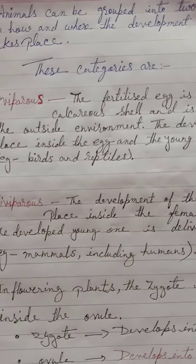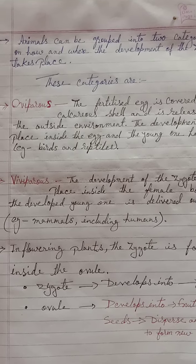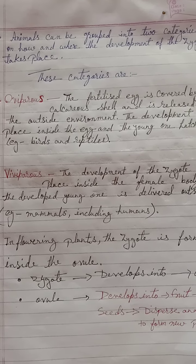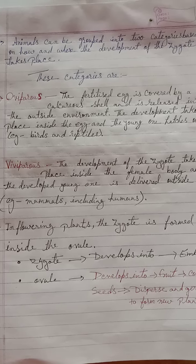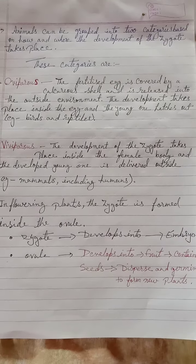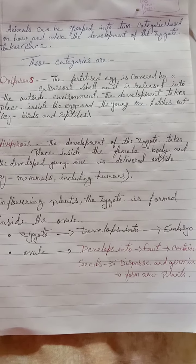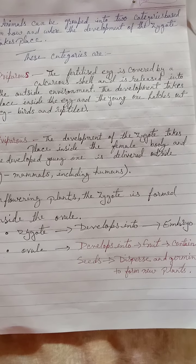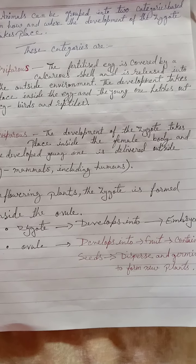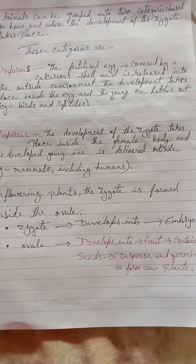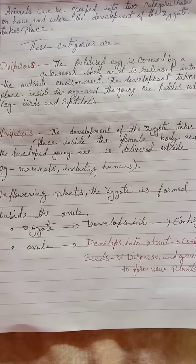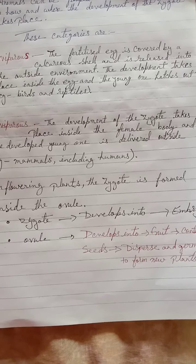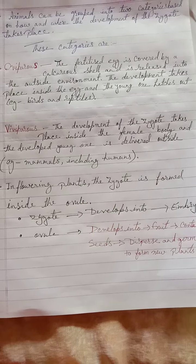Animals can be grouped into categories based on how and where the development of the zygote takes place. These categories are oviparous and viviparous. In oviparous animals, the fertilized egg is covered by a calcareous shell and released into the outside environment; development takes place inside the egg and the young one hatches out — for example, birds and reptiles. In viviparous animals, the development of the zygote takes place inside the female body and the developed young one is delivered outside — for example, mammals including humans.